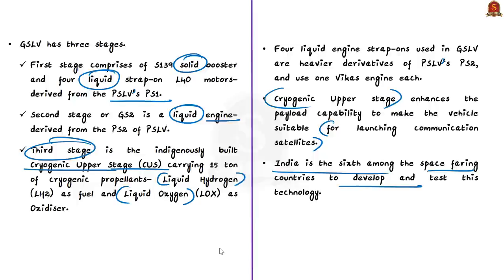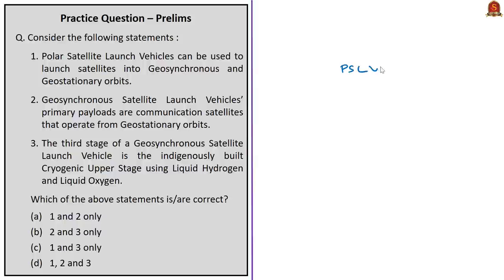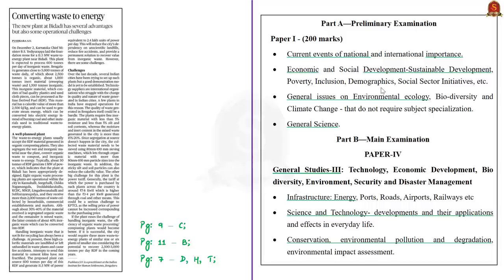This is all about GSLV. In this discussion, we saw about Polar Satellite Launch Vehicle and Geosynchronous Satellite Launch Vehicle. Now, we have this OPIT article which talks about waste-to-energy processes. It is written because recently the Chief Minister of Karnataka has laid the foundation stone for a 11.5 megawatt waste-to-energy plant near the Bededi town of Karnataka. In this discussion, we will see in detail about waste-to-energy, the advantages and also the challenges involved in it. The syllabus relevant for this analysis is highlighted here.